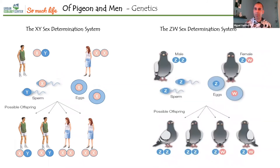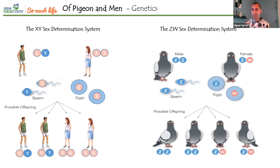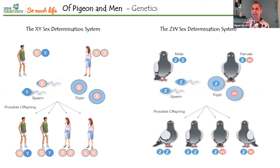Here we have the ZW sex determination system, and it's pretty much the same thing but the other way around. Some people prefer to use X and Y notation, but bear in mind that here the homomorphic individual is the male — it has the double chromosome — and the heteromorphic individual is the female.